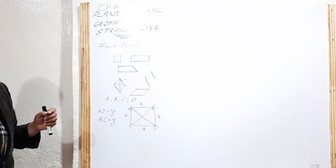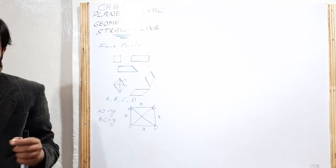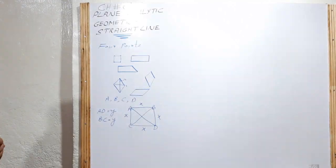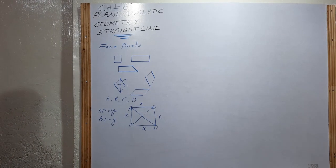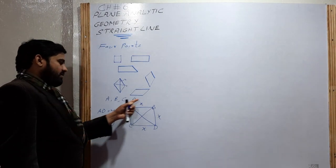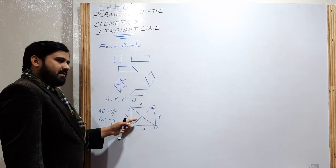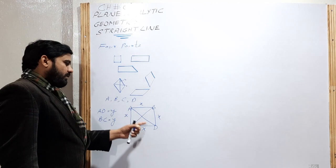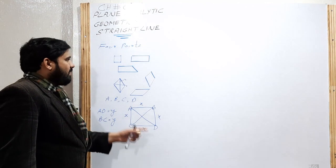So if the question is to show that four points form a square, we find six lengths: four side lengths and two diagonal lengths.